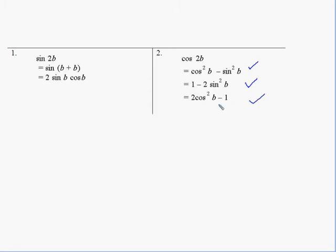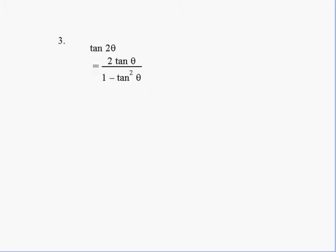Either one we're quite happy with. Tan 2θ, as we said, was 2 tan θ over 1 - tan²θ. So we've got to remember these results and put them into practice every time.